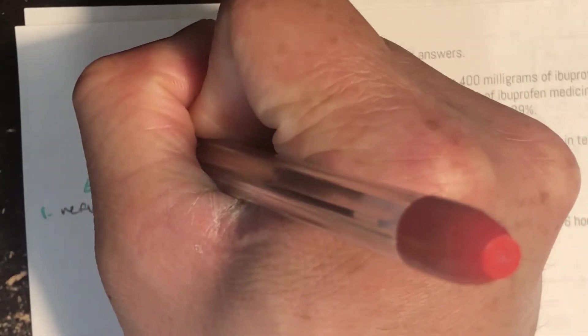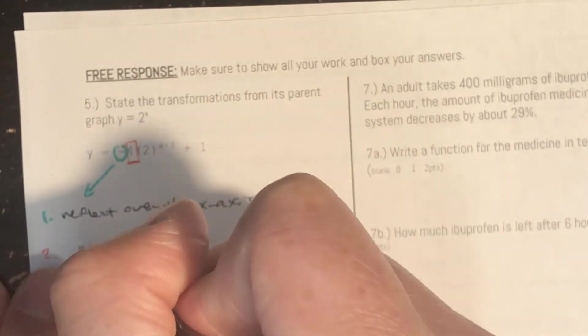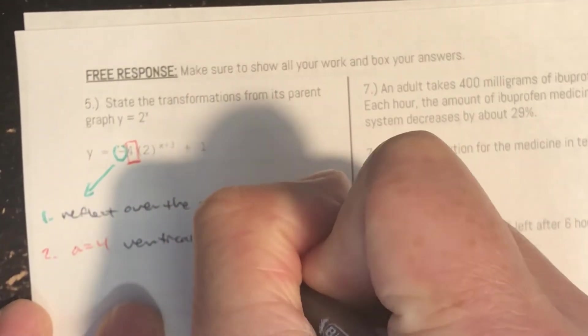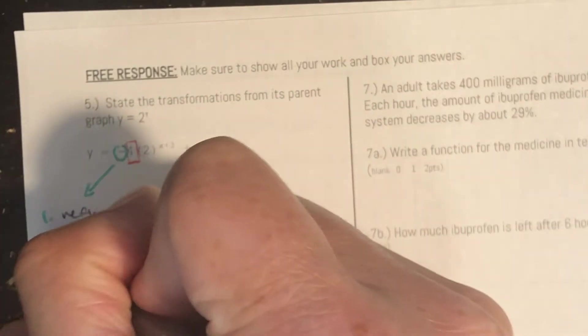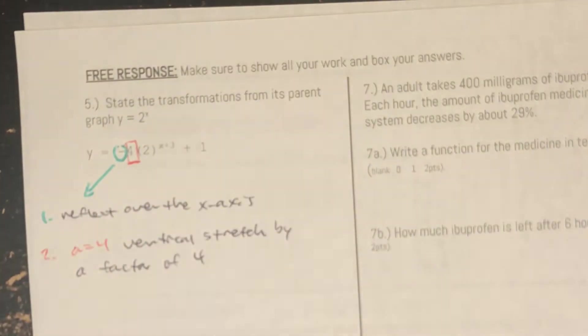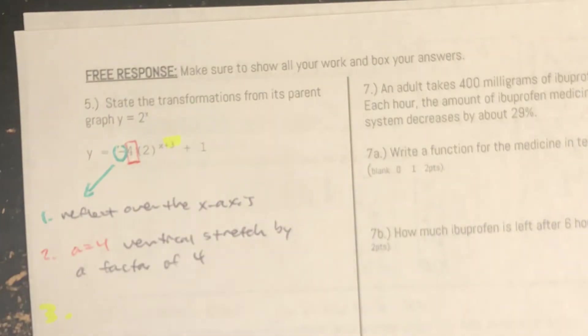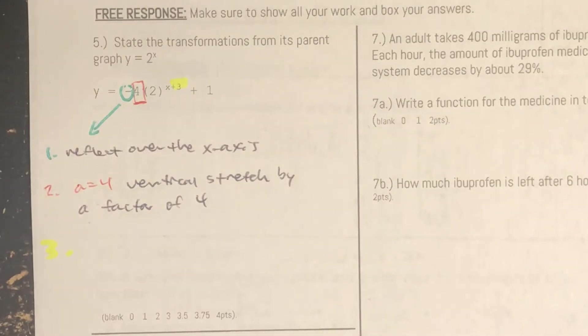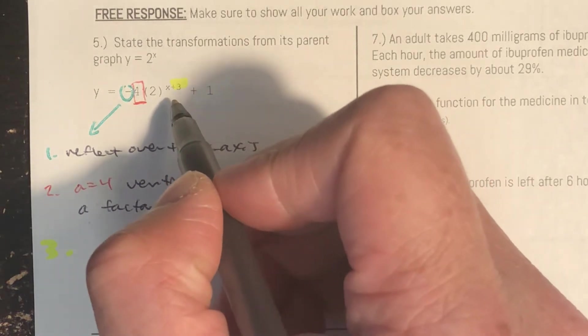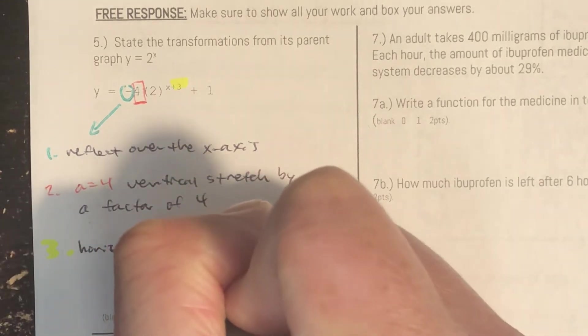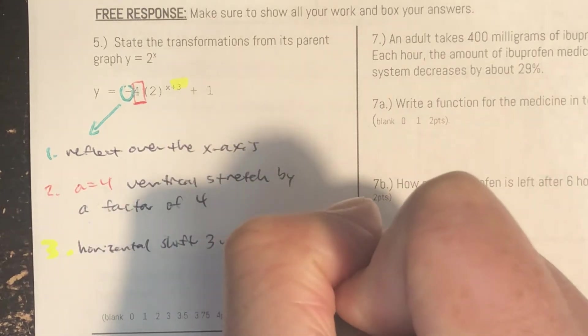Now the 4, that 4 there is an a value. And that basically means you're going to have a vertical stretch by a factor of 4. Okay here you have the plus 3. So the third thing we have to do, the plus 3 is a horizontal shift 3 units left.